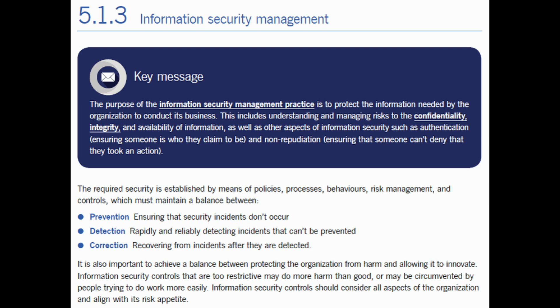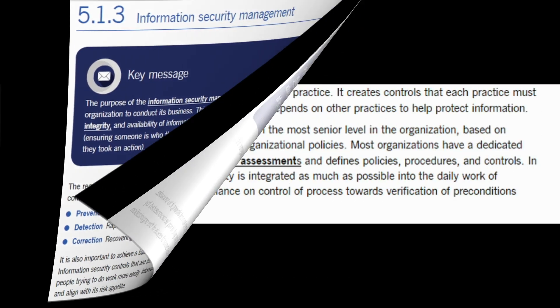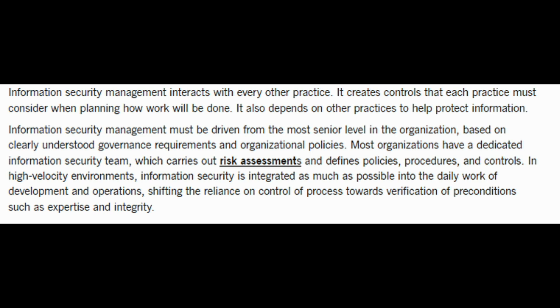It is also important to achieve a balance between protecting the organization from harm and allowing it to innovate. Information security controls that are too restrictive may do more harm than good, or may be circumvented by people trying to do work more easily. Information security controls should consider all aspects of the organization and align with its risk appetite. Information security management interacts with every other practice and creates controls that each practice must consider when planning how work will be done.